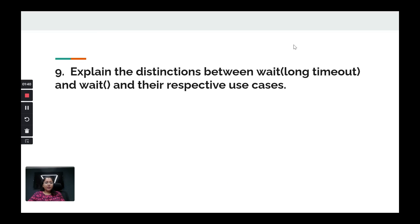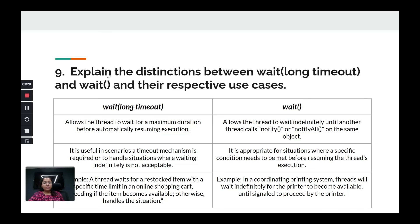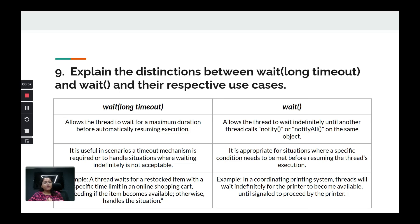The next question: what is the difference between wait(long timeout) and simple wait()? The wait with a timeout parameter allows the thread to wait for a maximum duration, while simple wait waits until notified by a condition. The timeout version is useful when you cannot wait indefinitely — for example, waiting only five seconds, and if the condition is not true by then, you proceed regardless.